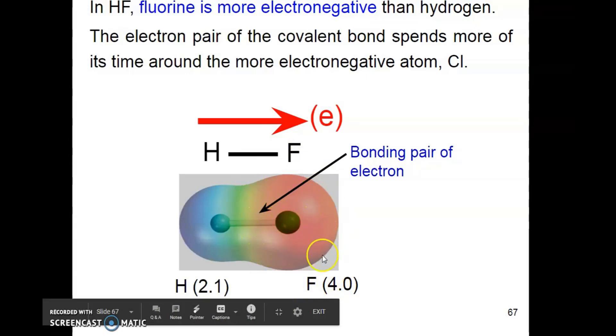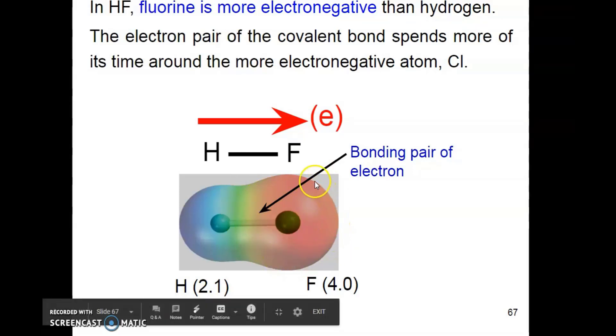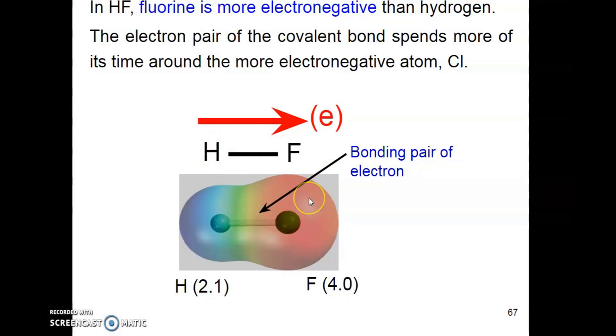We know fluorine is more electronegative than hydrogen. So, the electron pair of the covalent bond spends more of its time around the more electronegative atom which is fluorine. As a result, there is higher electron density around the fluorine atom as the shared pair of electrons are attracted more towards fluorine.